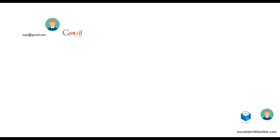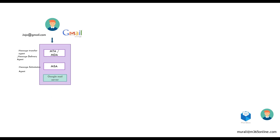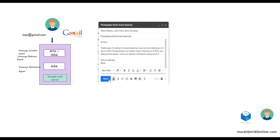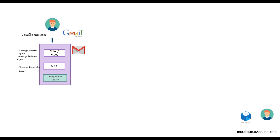Every mailbox provider has an email server that is responsible for processing the email. Gmail also has a mail server which is Google mail server, and this Google mail server is responsible for processing the email. As Jojo composes the mail and sends it to Exchange Online to murally, that mail will be picked up by the Message Transfer Agent and handed over to the Message Submission Agent.